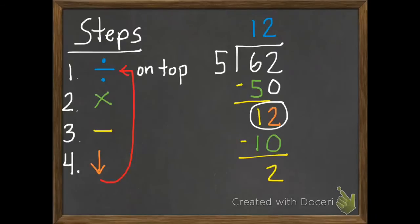Step 2 is to multiply. So that 2 we just wrote up there times 5 equals 10. Third step is to subtract. So 12 subtract 10, which is 2. Then we look to see if there's anything we have to bring down. There's nothing left to bring down. So that means we're done. So we've got 12 remainder 2.